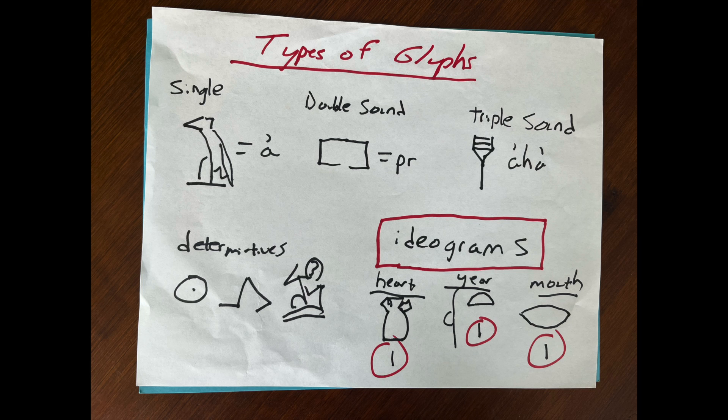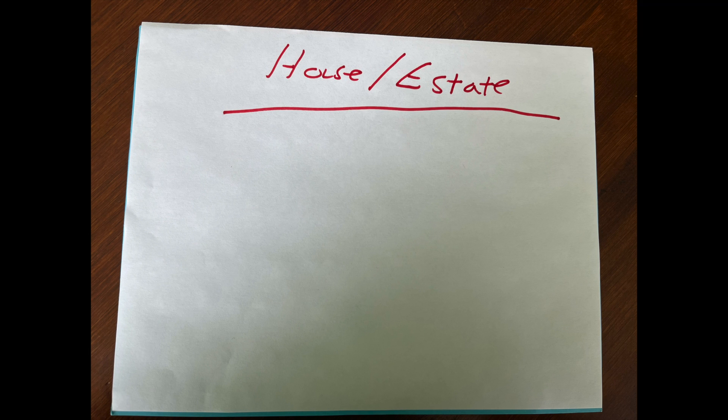And then determinatives. So, sound glyphs, determinatives, and ideograms. Luckily, a lot of ideograms you already know. So, for example,